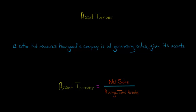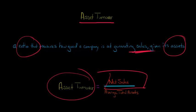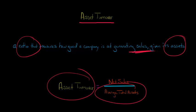In this video, I'm going to show you how to calculate and interpret asset turnover. Asset turnover is a ratio, and we use it to tell how good a company is at generating sales revenue given the amount of assets that the company has. We calculate the asset turnover ratio by taking the company's net sales revenue and dividing it by the company's average total assets.